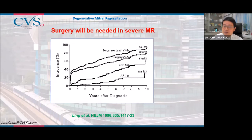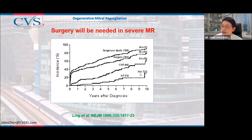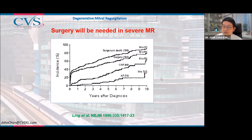If severe mitral regurgitation is managed medically without surgery, over 10 years: about 30% of patients will develop atrial fibrillation, 60% will develop congestive heart failure requiring at least one hospital admission, 80% will eventually go for surgery, and 90% will either have had surgery or passed away. This is a condition which will require surgery within the next 10 years if you have severe mitral regurgitation.